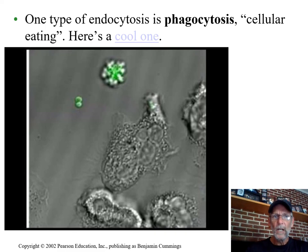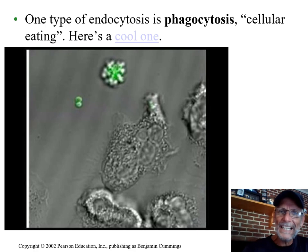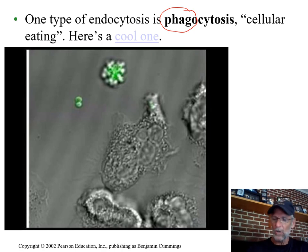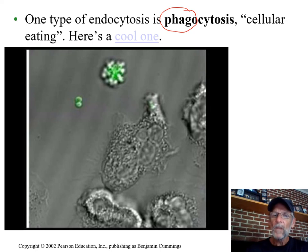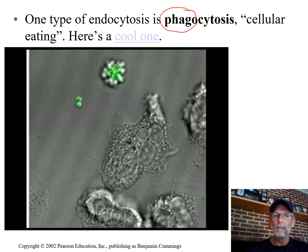One kind of endocytosis, if the cell is eating things, is called phagocytosis — 'phag' is an eat word. This is what white blood cells do to things like bacteria. The green things in the video are bacteria, and a big white blood cell moves around using microfilament-driven amoeboid movement to gobble up those bacteria cells.